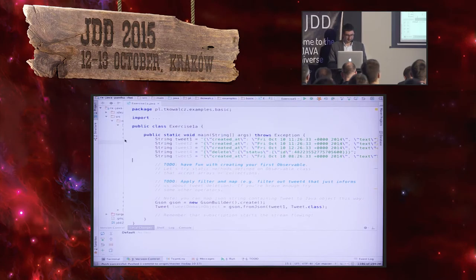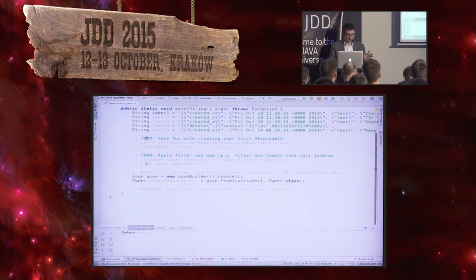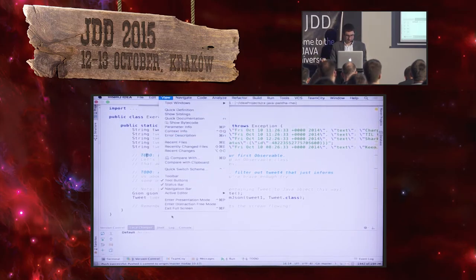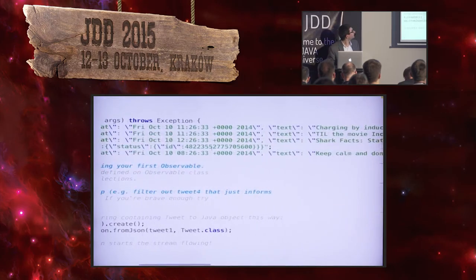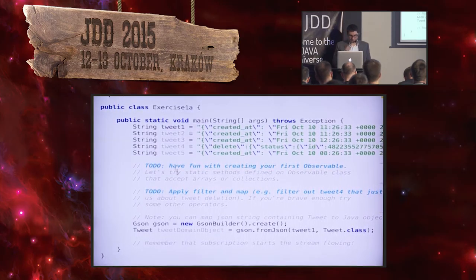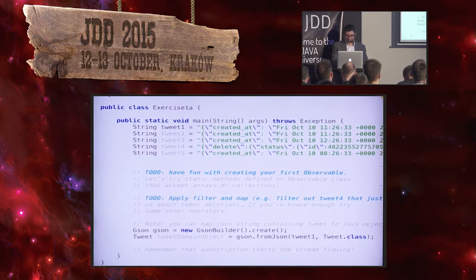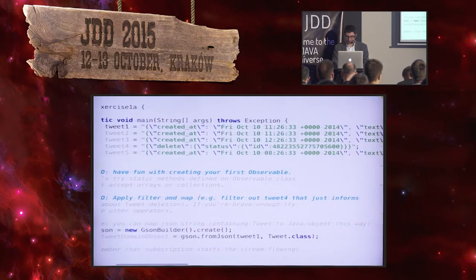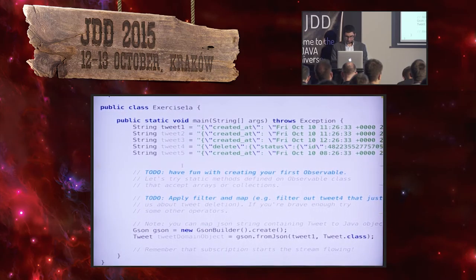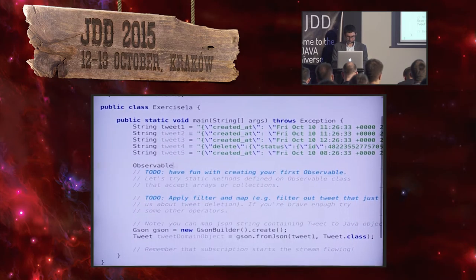Here we go. The first examples show us how we can play with creating the first observable. We have five tweets that are ready for us to process — these are JSON representations of those tweets. We should create our first observable and try to do some stream processing: apply some map, filter, and similar stuff.